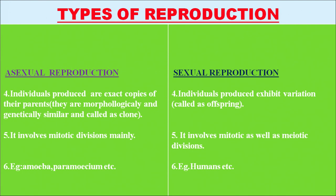Variation is the most important characteristic of sexual reproduction. In asexual reproduction it involves mainly mitotic divisions, while in sexual reproduction it involves both mitotic and meiotic divisions. Examples of asexual reproduction are amoeba and paramecium, while sexual reproduction includes humans etc.